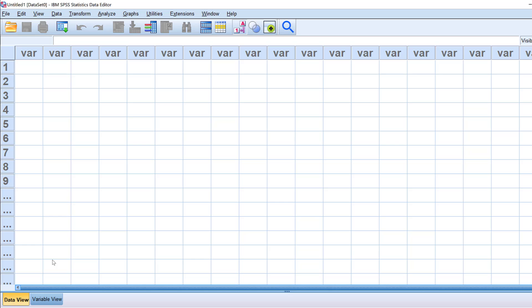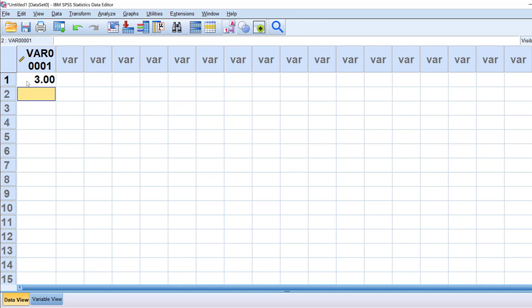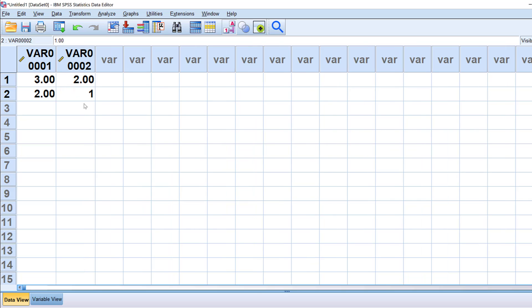This is SPSS. We have data view and variable view. In the data view, we have the items here and the respondents here, or the people who answer. Suppose that in the first item, the first respondent says this is always the case, we code it as three. Then the second one says sometimes, code it as two. The same for this item: two, one. I'm just entering this randomly.